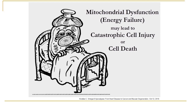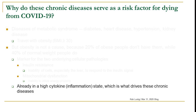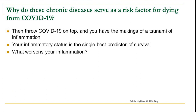So why do chronic diseases serve as a risk factor for dying from COVID-19? With chronic medical conditions, you are in a chronic inflammatory state — it's like a fire burning — and then COVID-19 comes along and dumps extra fuel on it. The next thing you know, you have a cytokine storm that can lead to the perfect storm. Your inflammatory status is hypothesized to be the single best predictor of survival. Chronic medical conditions lead to chronic inflammation, and COVID-19 worsens it.